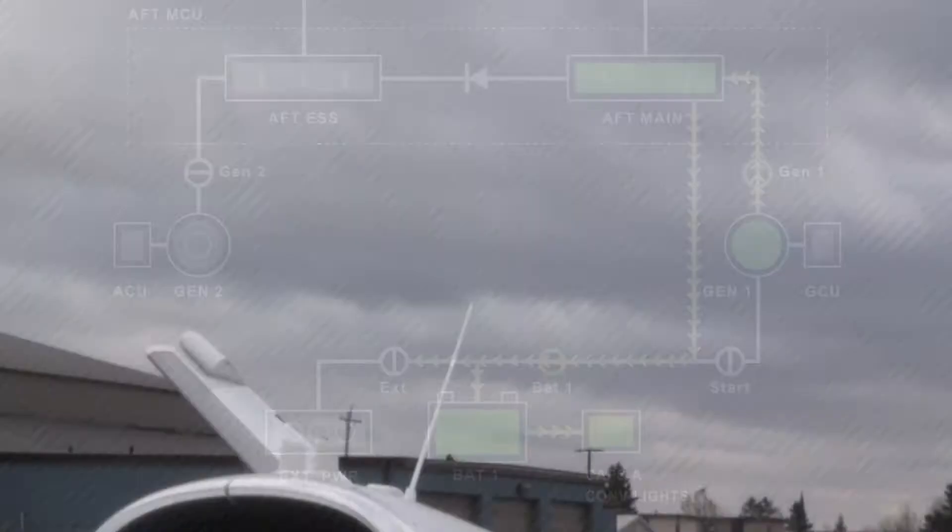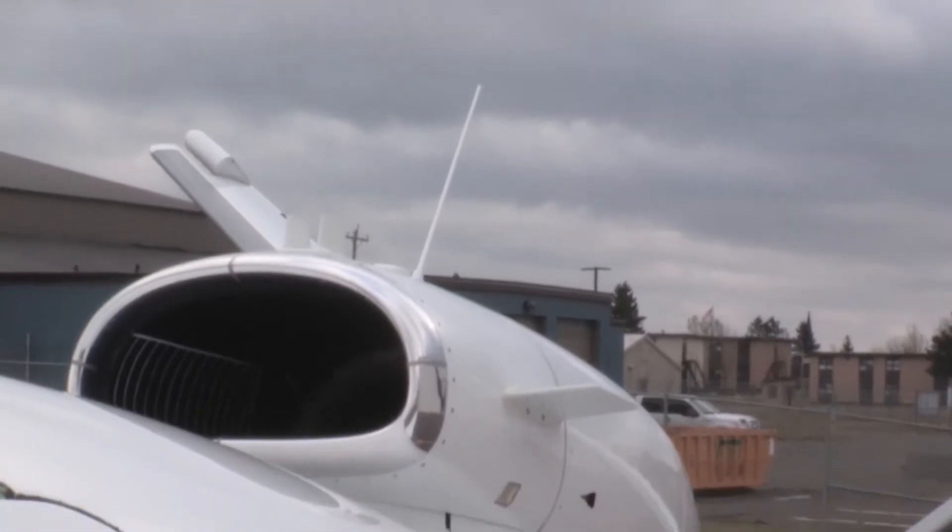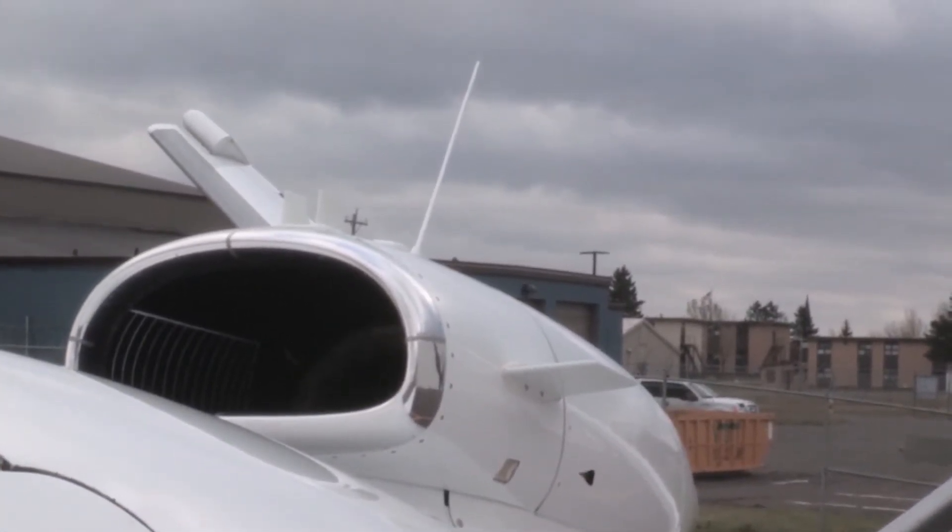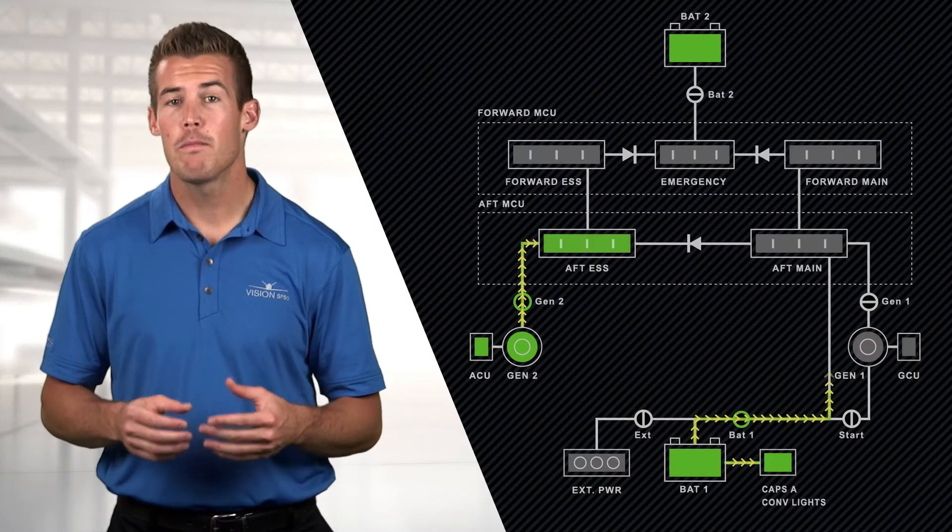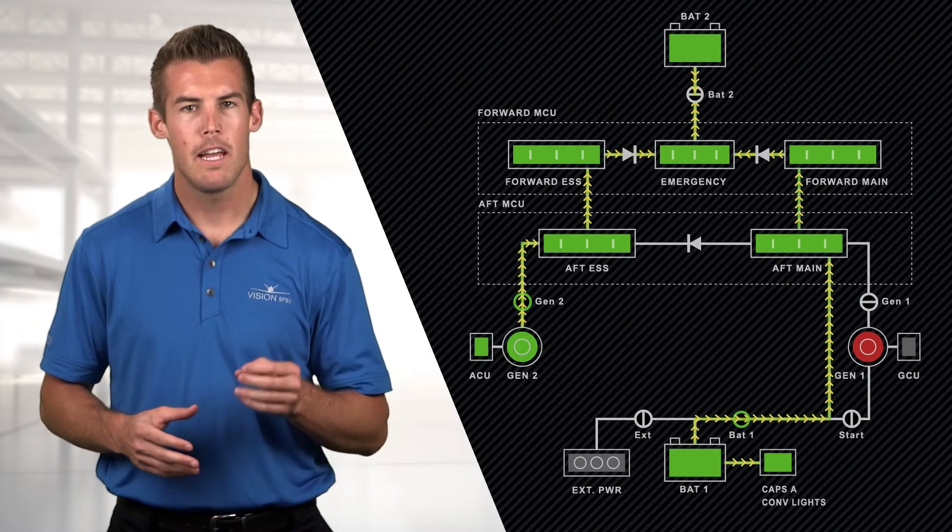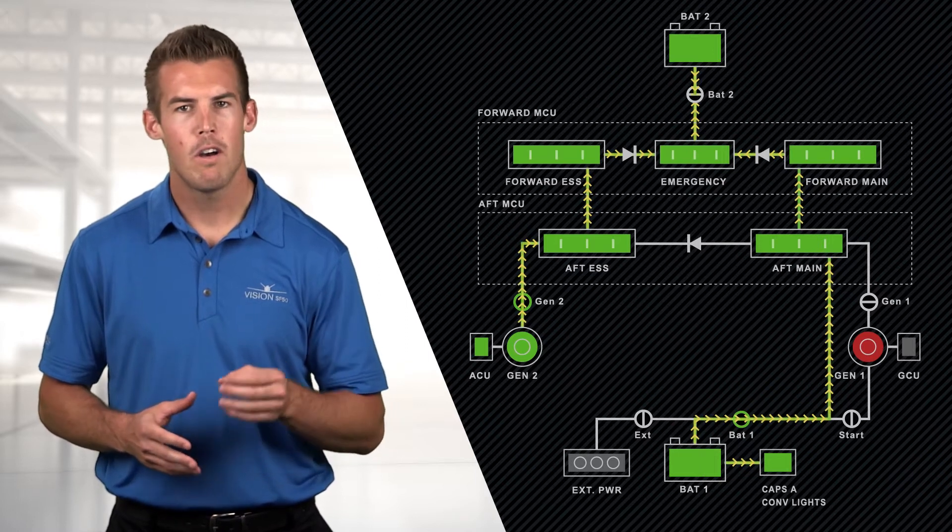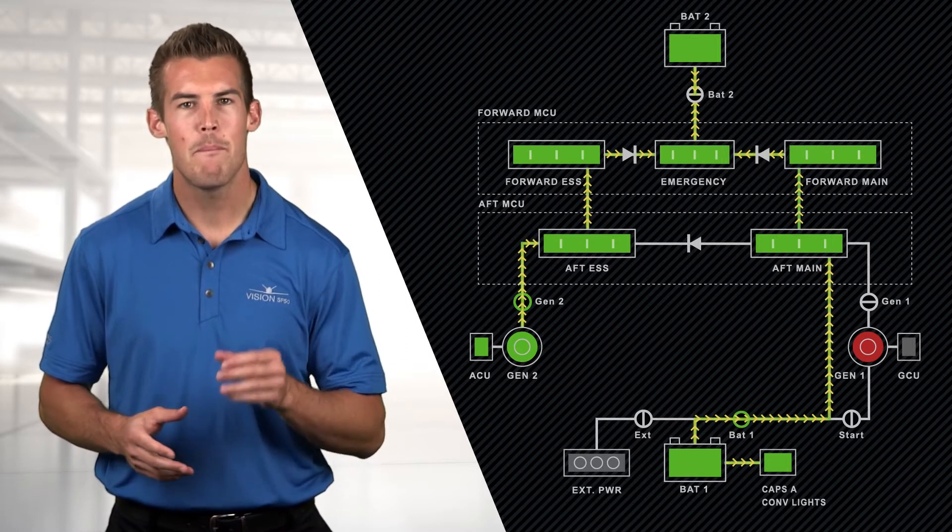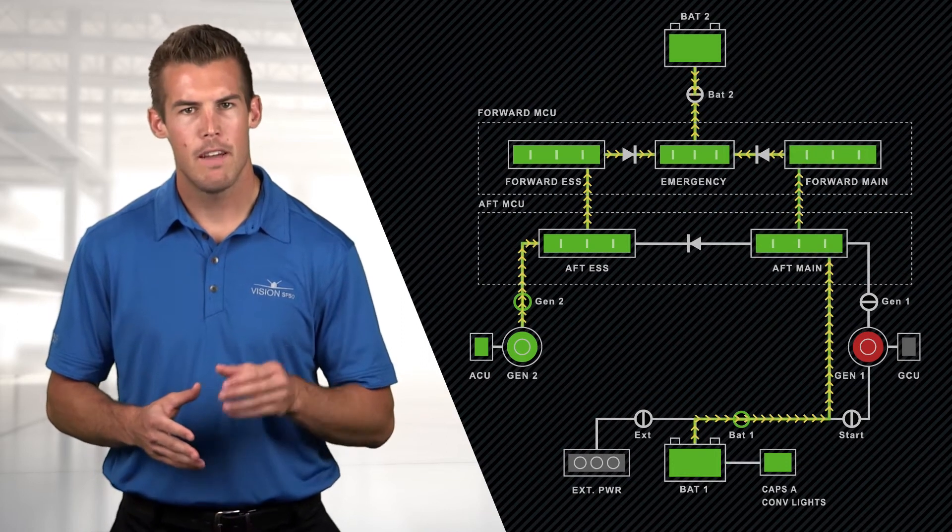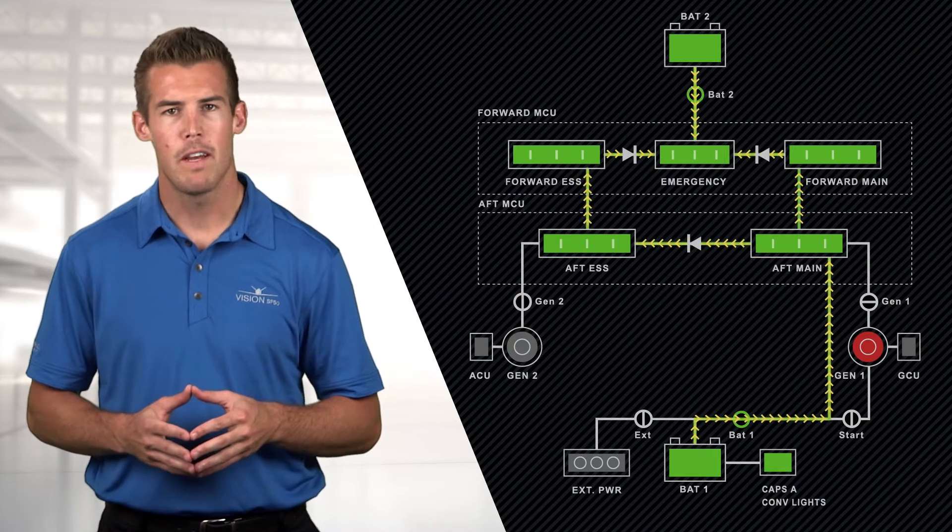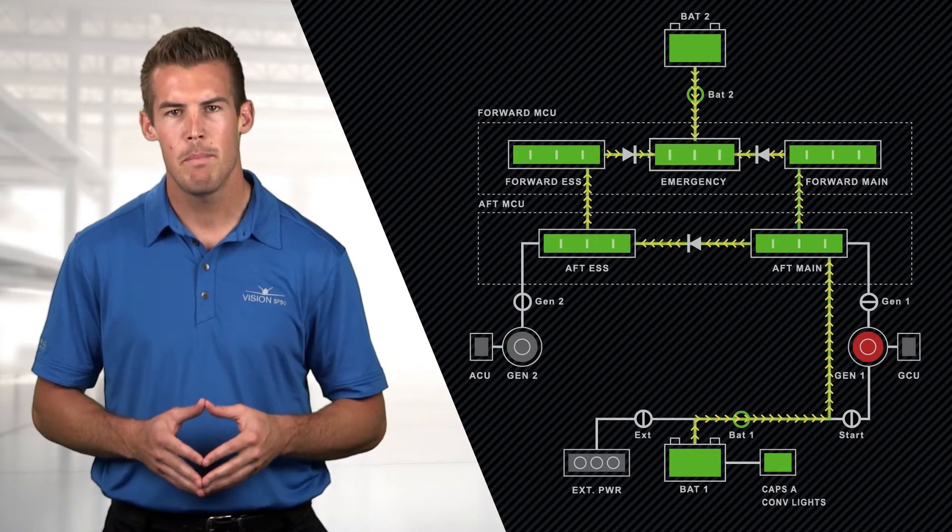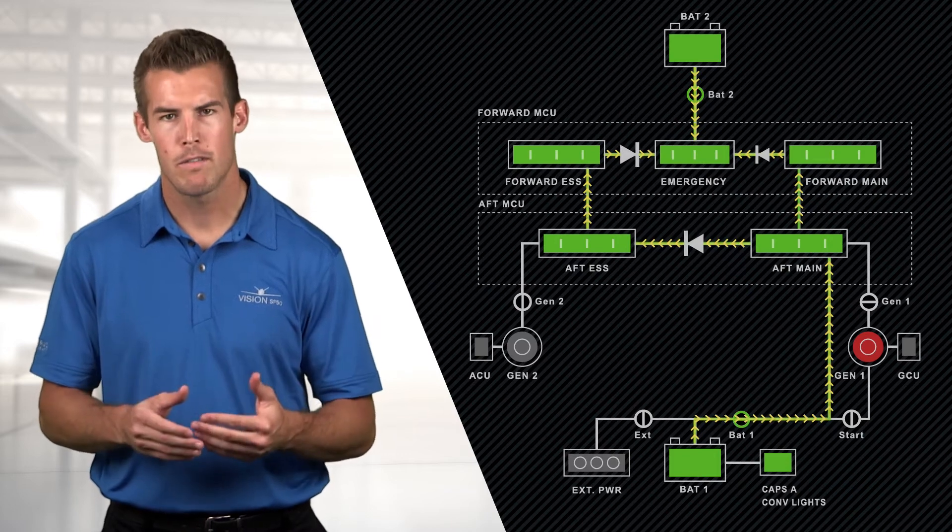While BAT1's primary purpose is to provide power for starting the engine, it also serves as a backup for Gen 1. If power from Gen 1 is lost, the Environmental Control System, a large consumer of power, is automatically switched off and BAT1 takes over the balance of the main bus loads. If Gen 2 were to also fail, BAT1 would feed the essential and emergency buses via a crossover diode.